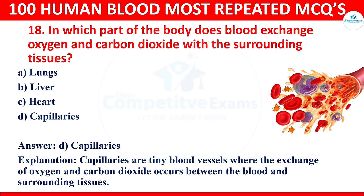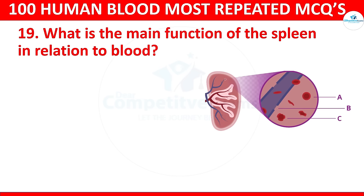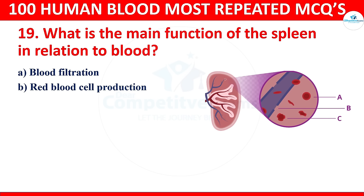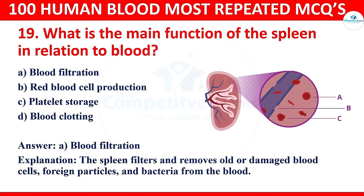Question 19: What is the main function of the spleen in relation to blood? Options: blood filtration, red blood cell production, platelet storage, or blood clotting. The correct answer is blood filtration. The spleen filters and removes old or damaged blood cells, foreign particles, and bacteria from the blood.